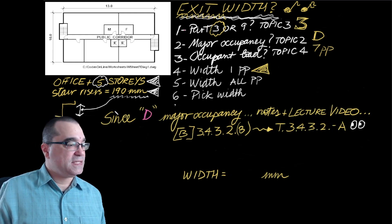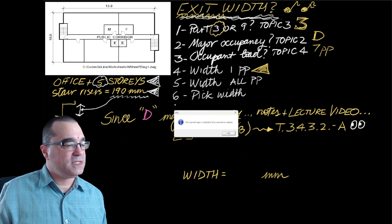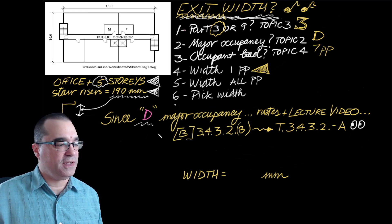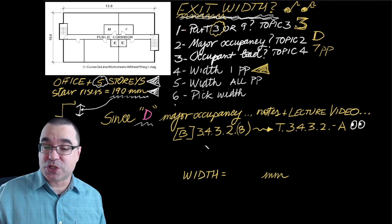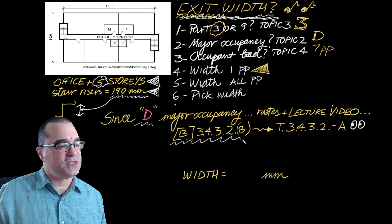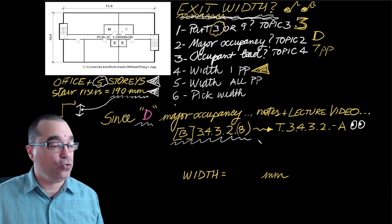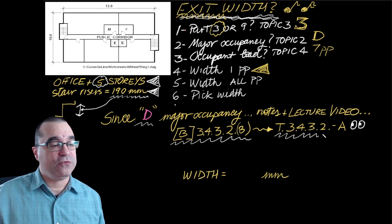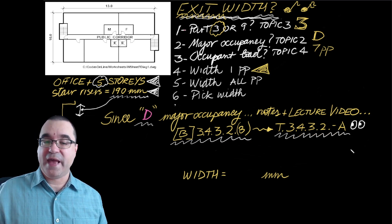Because this is a D major occupancy, and from the information that you get from the course notes and the lecture video, the correct portion of the Ontario Building Code to get this information from is Sentence 3.4.3.28 under Division B, which then takes you to Table 3.4.3.2a.